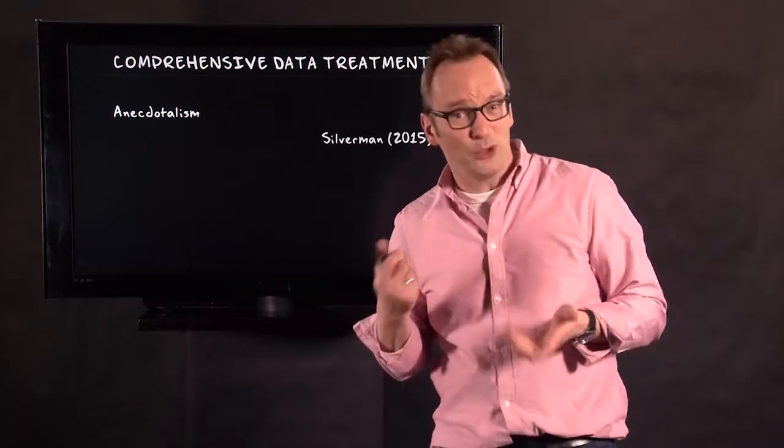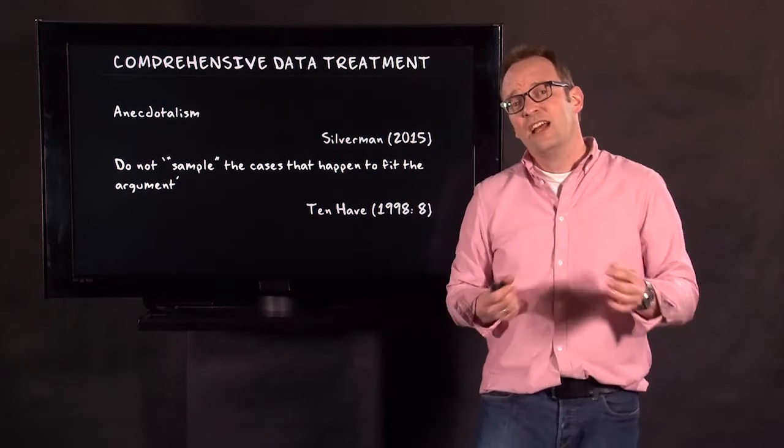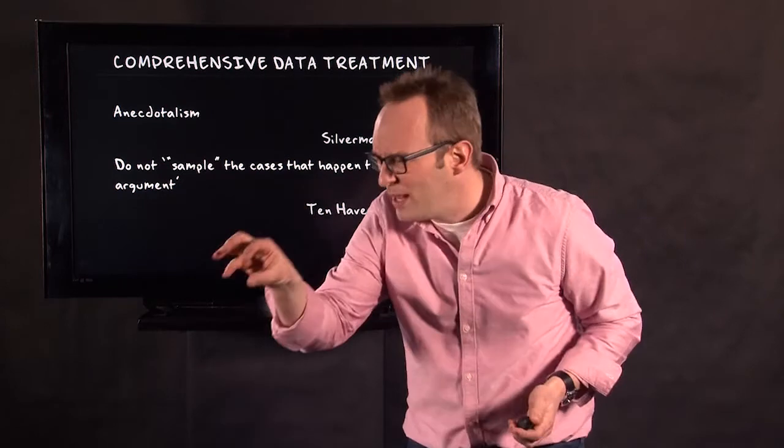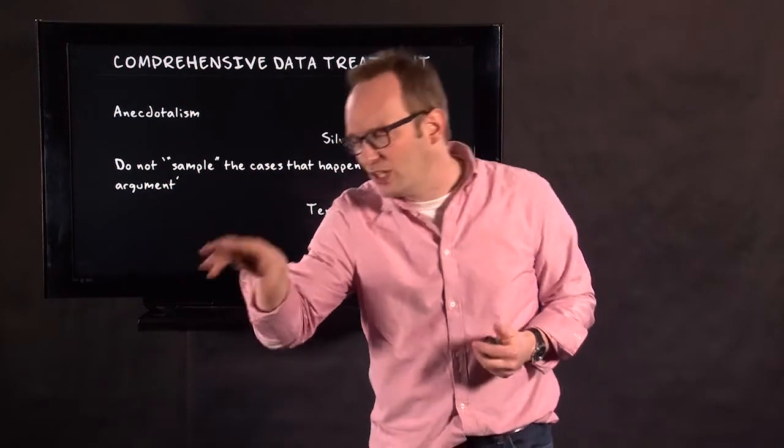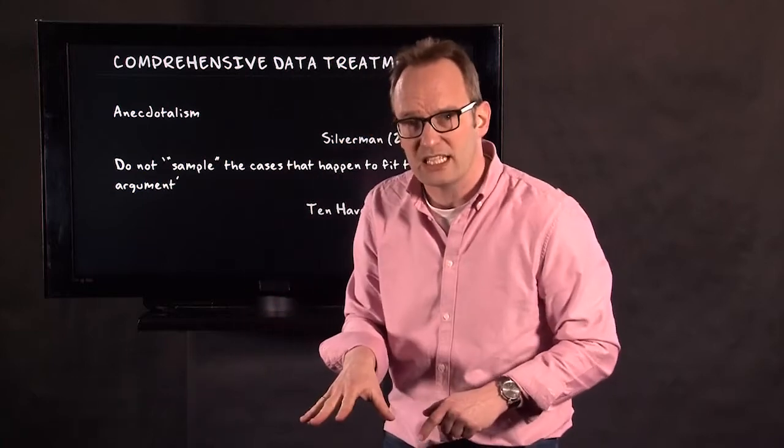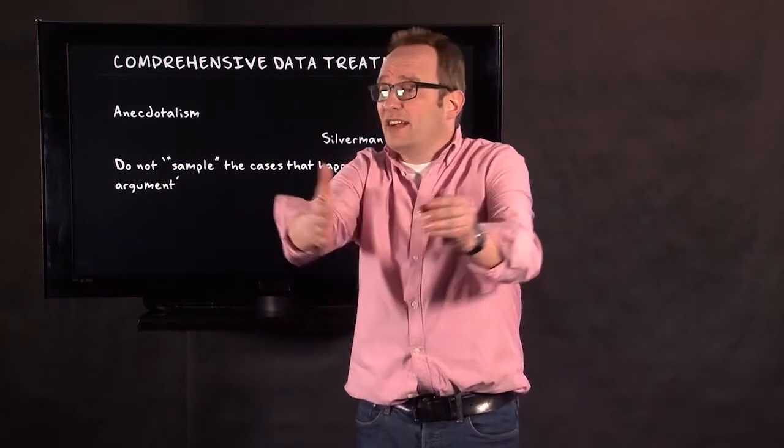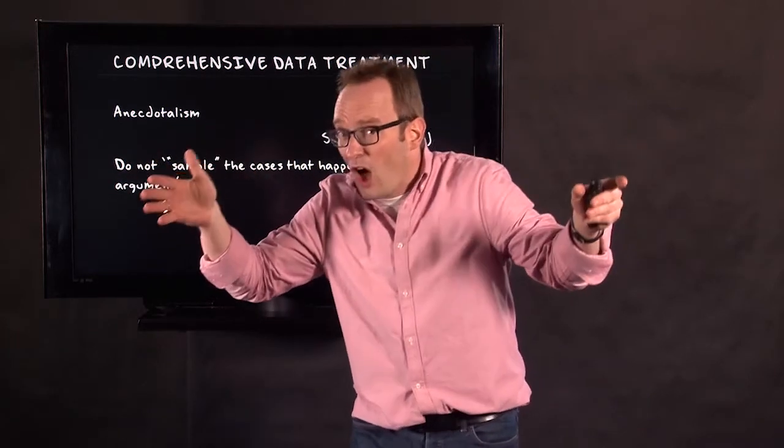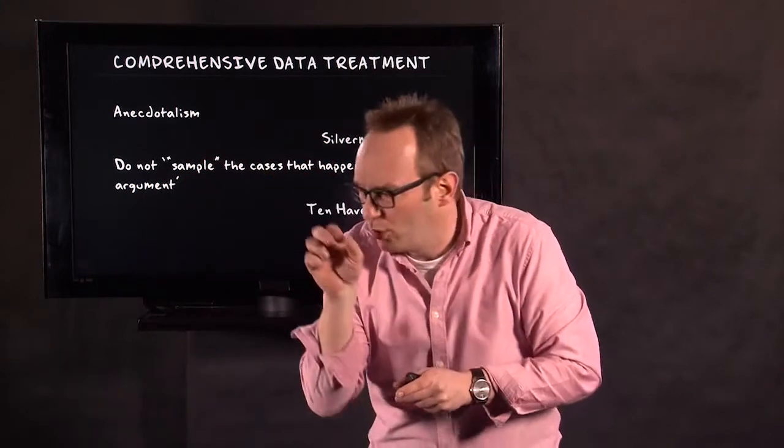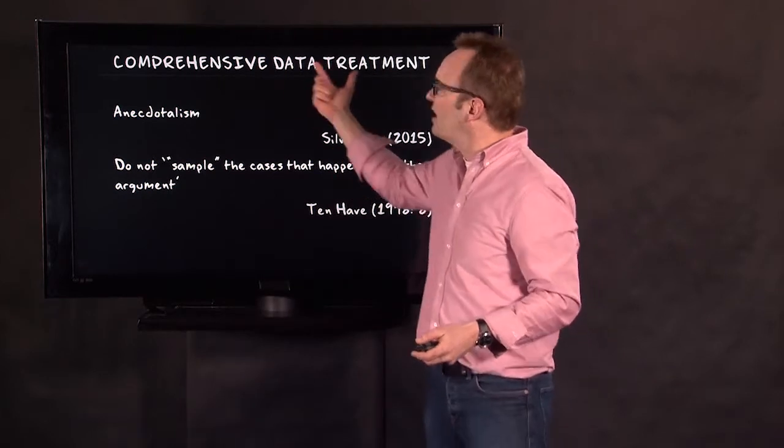But part of it is to do comprehensive data treatment, as David Silverman and Perti Alasuutari call it. And what you do in comprehensive data treatment is you fight anecdotalism, you fight cherry picking. And how? You do not only pick the nitty gritty details and describe those details. No, you also describe the deviant cases and you show how this is either something like an average or generalizable to all your data, or not. But you do not only pick the cool stories, so you deal with all data.